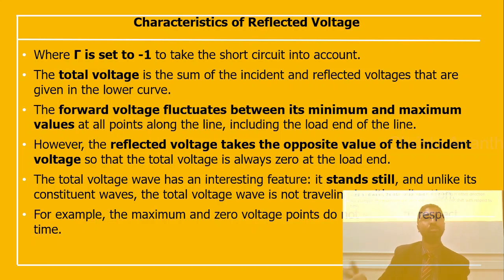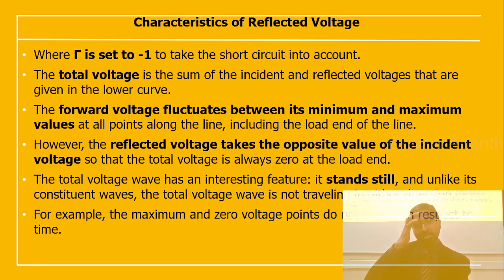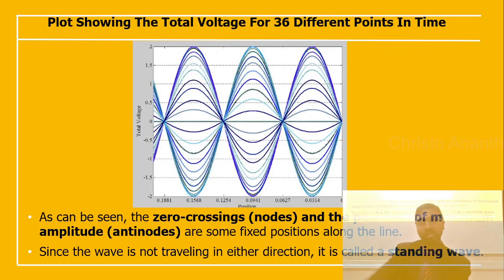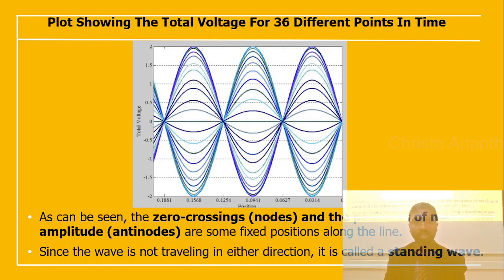The total voltage stands still — unlike its constituent waves, the total voltage wave is not traveling in either direction. The maximum and zero voltage points do not shift with respect to time. A plot showing the total voltage for 36 different points in time reveals fixed zero-crossing nodes and fixed maximum-amplitude anti-nodes along the line. Since the wave is not traveling in either direction, it is called a standing wave.